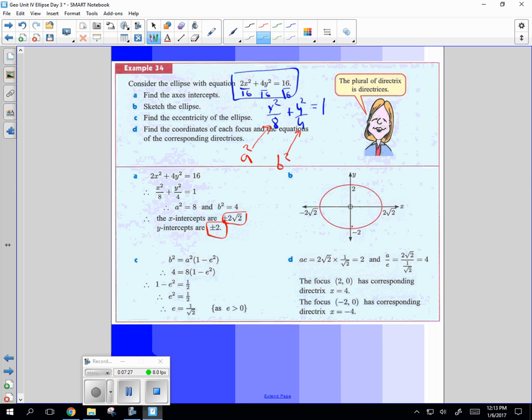You need to know what e is. So this relationship that we had for b and a has an e in it. We can use that to find the eccentricity, which is 1 over square root of 2. And then the focal point is a times e, comma 0, plus and minus. And x is equal to plus and minus a over e. And that's how they found all those values.